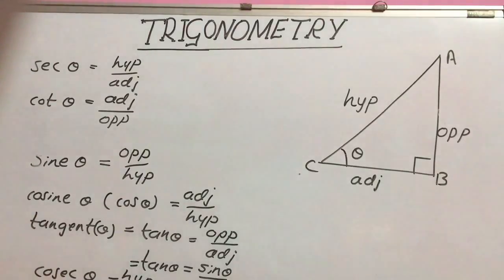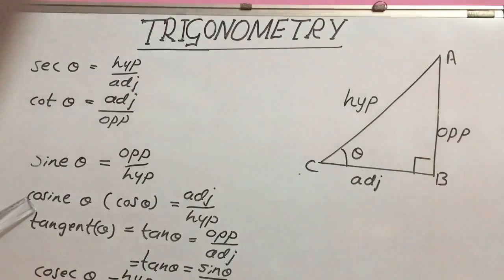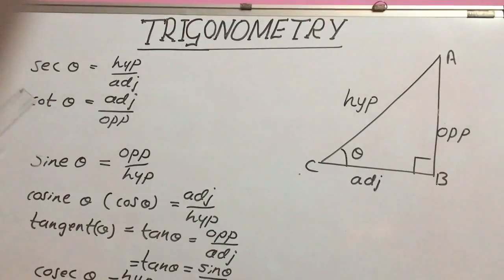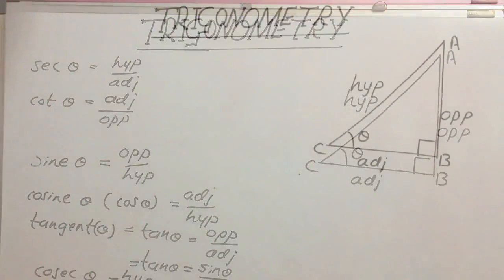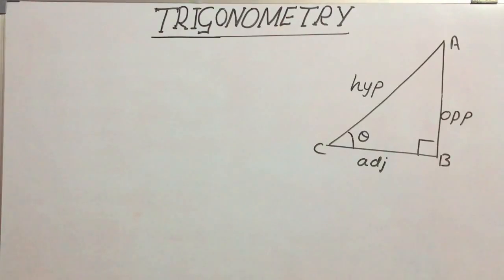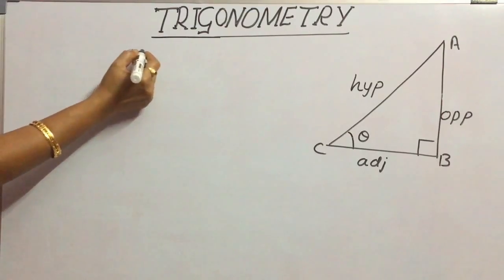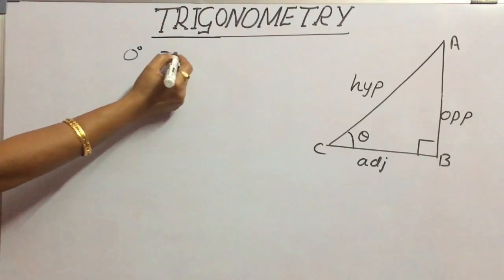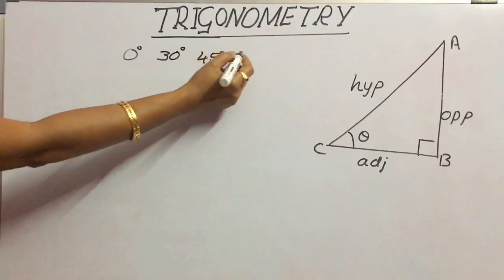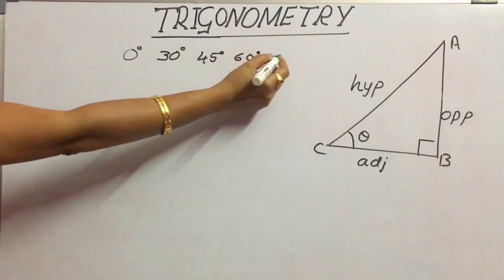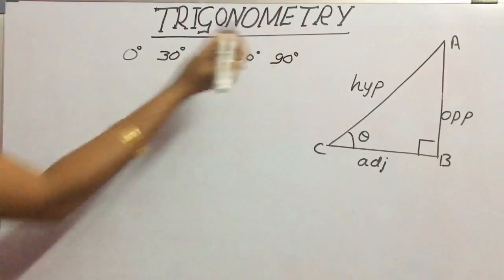So we have six trigonometric ratios: sin theta, cosine theta, tan theta, cosec theta, sec theta, and cot theta. Now let us move on to some trigonometric values for fixed angles — for example, 0 degrees, 30 degrees, 45 degrees, 60 degrees, and 90 degrees.